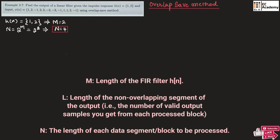We can find the value of L by using the formula N = M + L - 1. Substituting the values of M and N, we get 4 = 2 + L - 1, so L is equal to 3. Remember: since N was not given, we used this formula. If N is given, we can use this formula directly to find L.